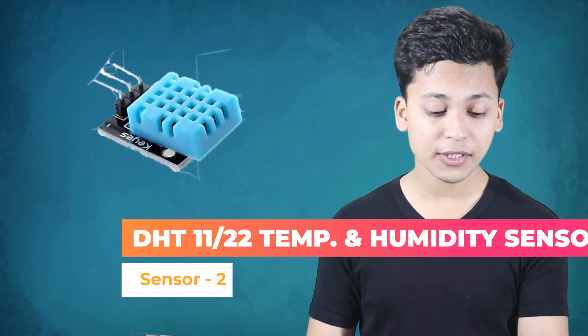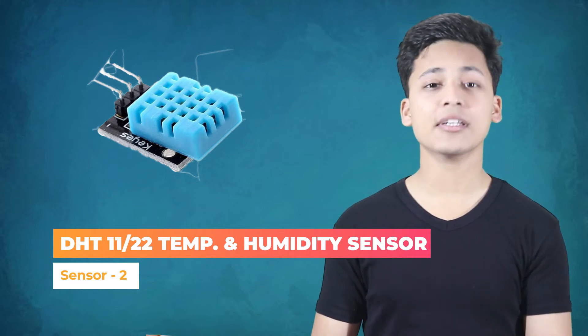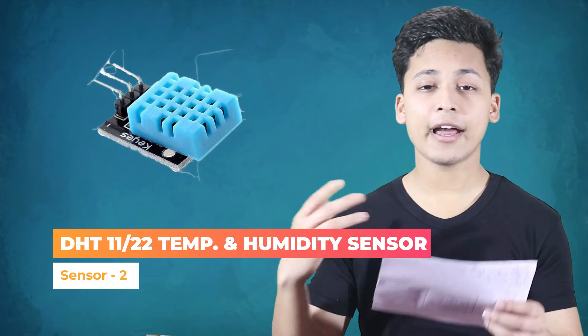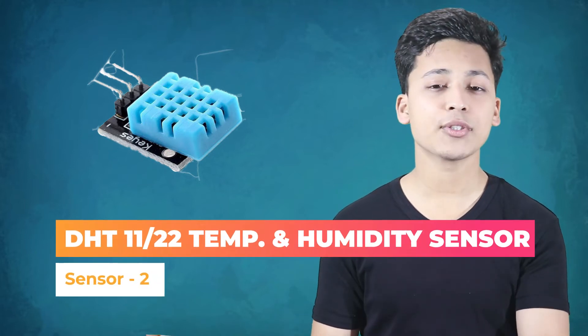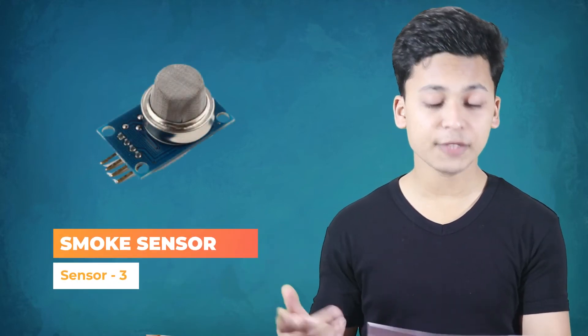The second sensor is the DHT11 or DHT22 temperature and humidity sensor. This sensor is used to get the external humidity and temperature of the environment. You can use it to trigger actions — for instance, if there's high humidity and high temperature outside, you might want to switch on the air conditioner or the fan.